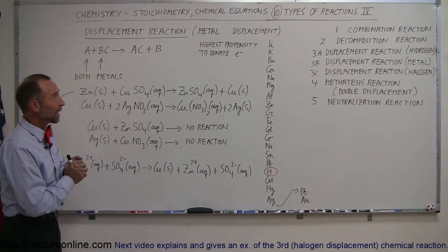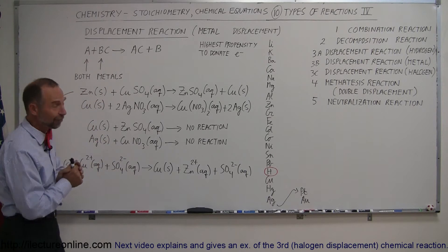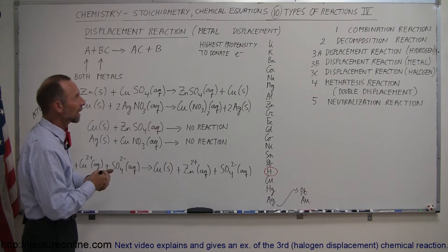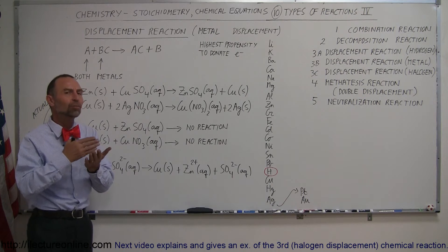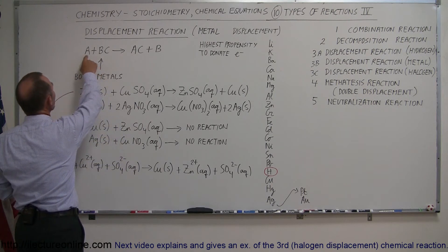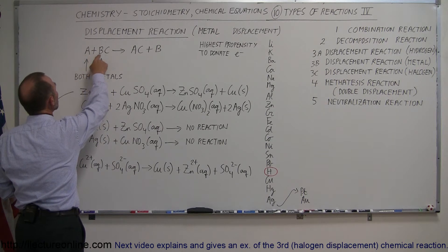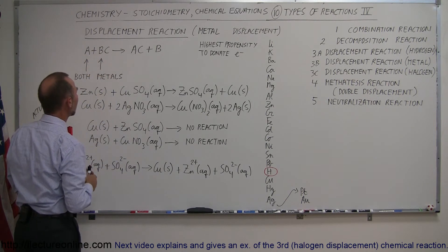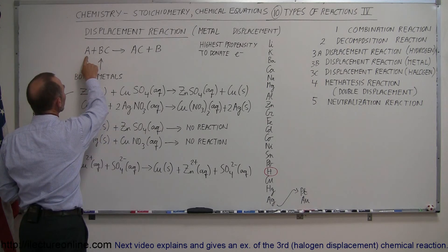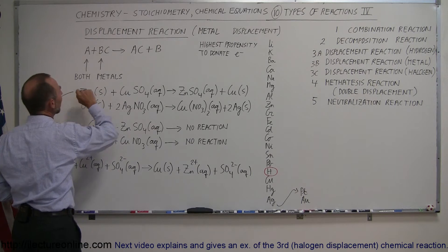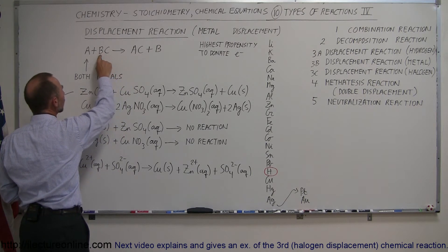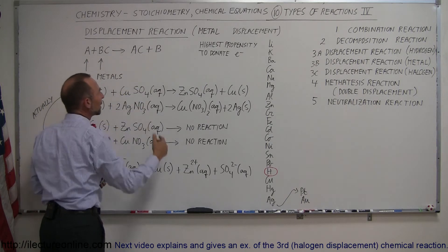This video on the different types of reactions brings us to a different kind of displacement reaction called the metal displacement reaction. What's happening here is that one metal is displacing another. We have a free metal in solid form plus a metal attached to some ion in an aqueous solution. When you place the other metal in, it will take the first metal's place, bonding with the ion in the aqueous solution, while the other metal precipitates out as a solid.